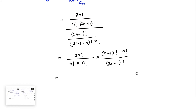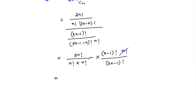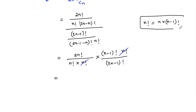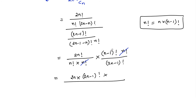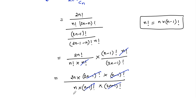We simplify and cancel n factorial with n factorial. Using the concept that n factorial equals n into n minus 1 factorial, we write 2n factorial as 2n into 2n minus 1 factorial, cancelling the 2n minus 1 factorial terms. Similarly, n factorial in the denominator is written as n into n minus 1 factorial, cancelling n minus 1 factorial. The remaining n and n cancel, leaving 2.